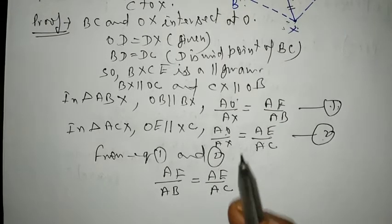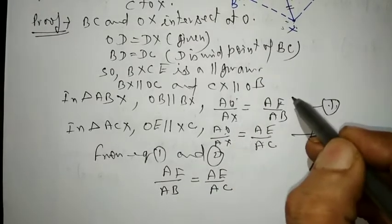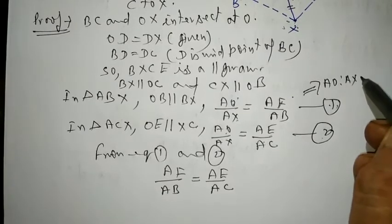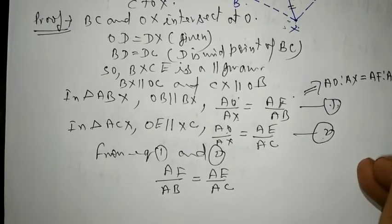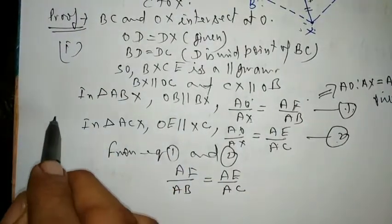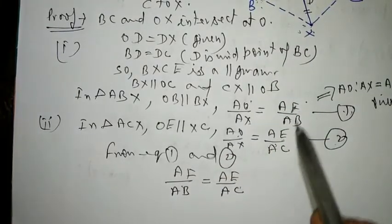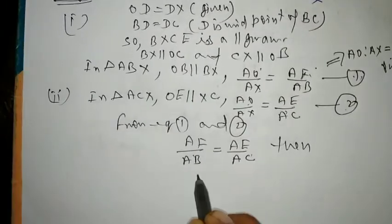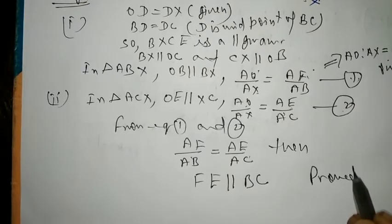From equation 1, AO upon AX is equal to AF upon AB — the first part is proved here. For the second part: since the ratios of sides are equal, FE is parallel to BC. The second part is proved.